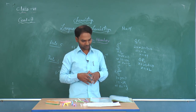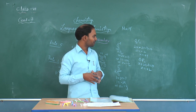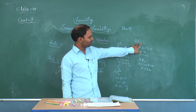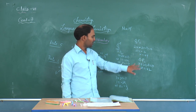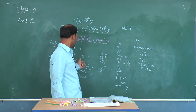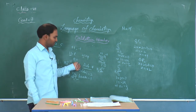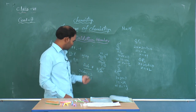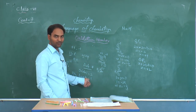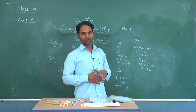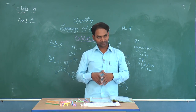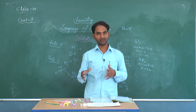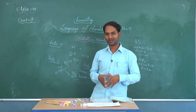They also ask about oxidation numbers of oxygen in various compounds: in oxygen difluoride it is +2, in oxy fluoride it is +1, in water (normal oxide) it is -2, and in H2O2 (peroxide) it is -1. That covers this session. In the next session we will see further rules of oxidation number. Thank you.